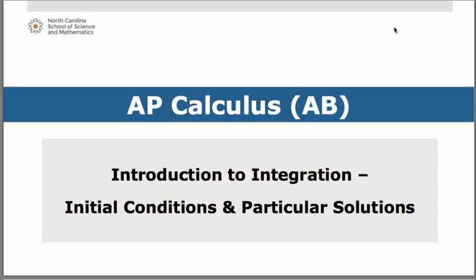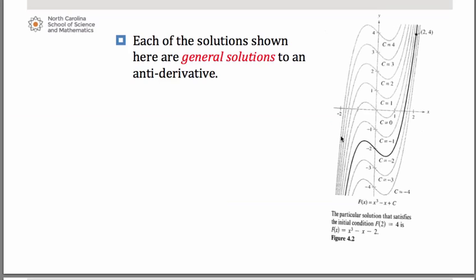We are now going to talk about integration using initial conditions and particular solutions. If you take a look at the graph here, you'll notice these are all the same shape. What we have here are the general solutions of an antiderivative. The antiderivative is x cubed minus x minus 2, and if you look at these graphs, they all obviously are cubic graphs. All of these curves, although they have the same shape, pass through different points on the y-axis. That's because the constant of integration, the c value, would be different for each one of these curves. The variable part is identical for all of them, but what differs is the constant, which affects the height of the curve in the coordinate plane.